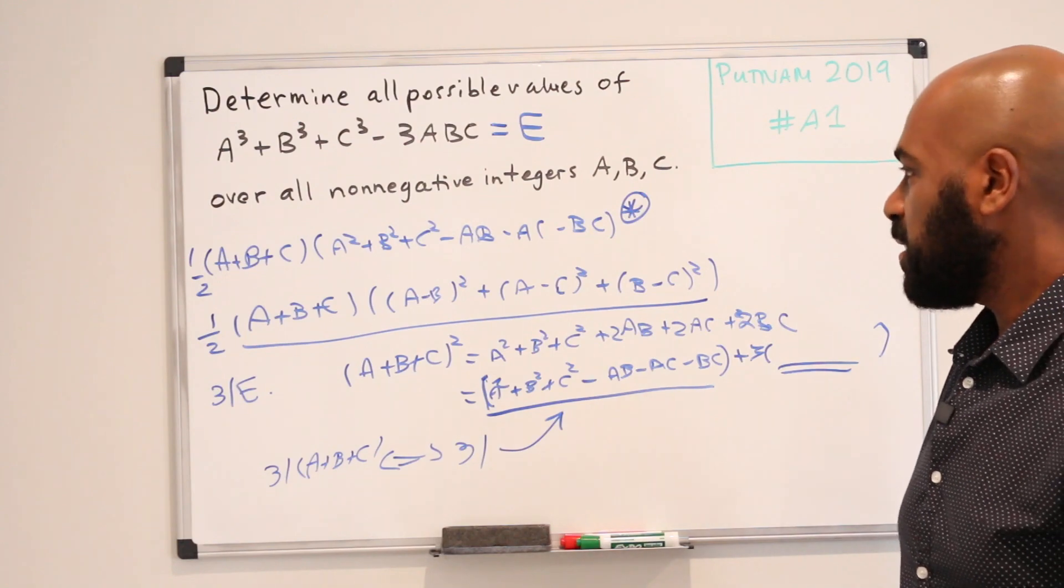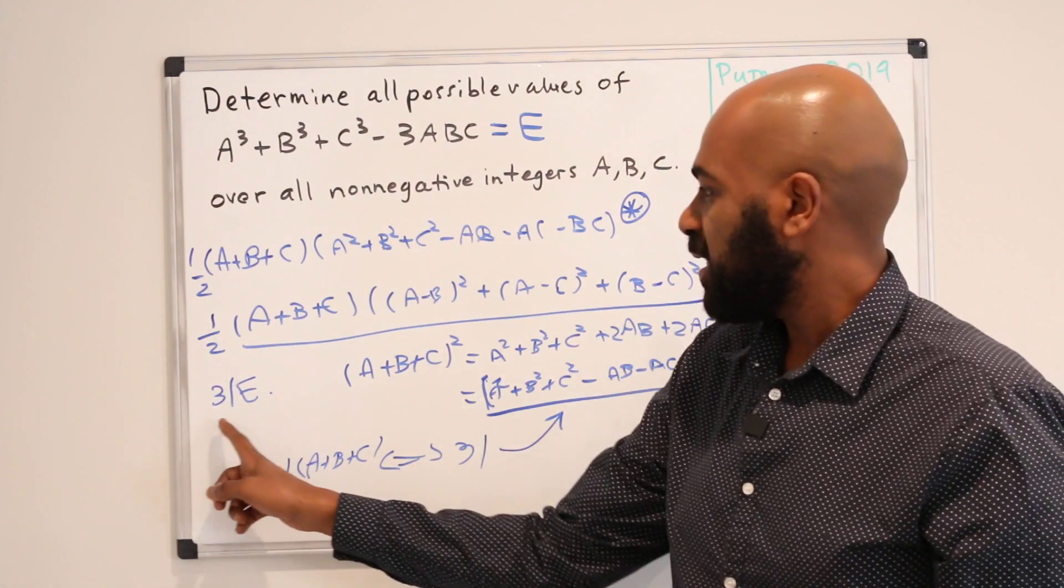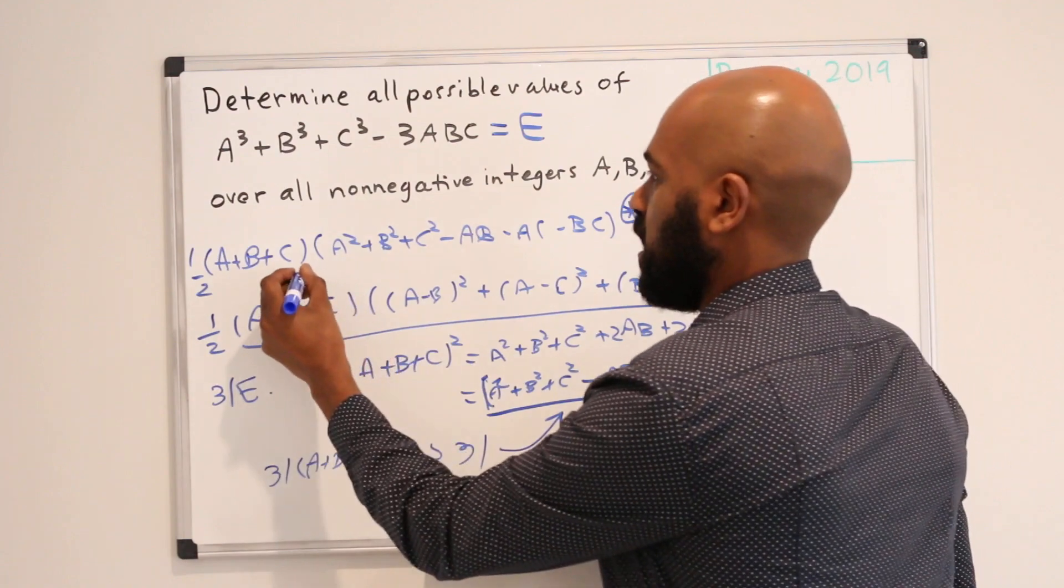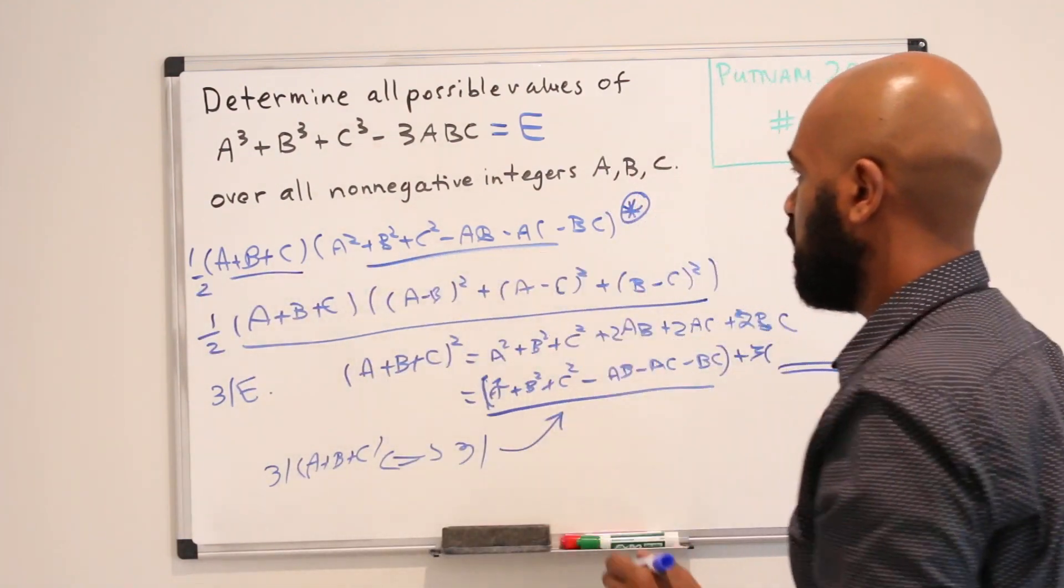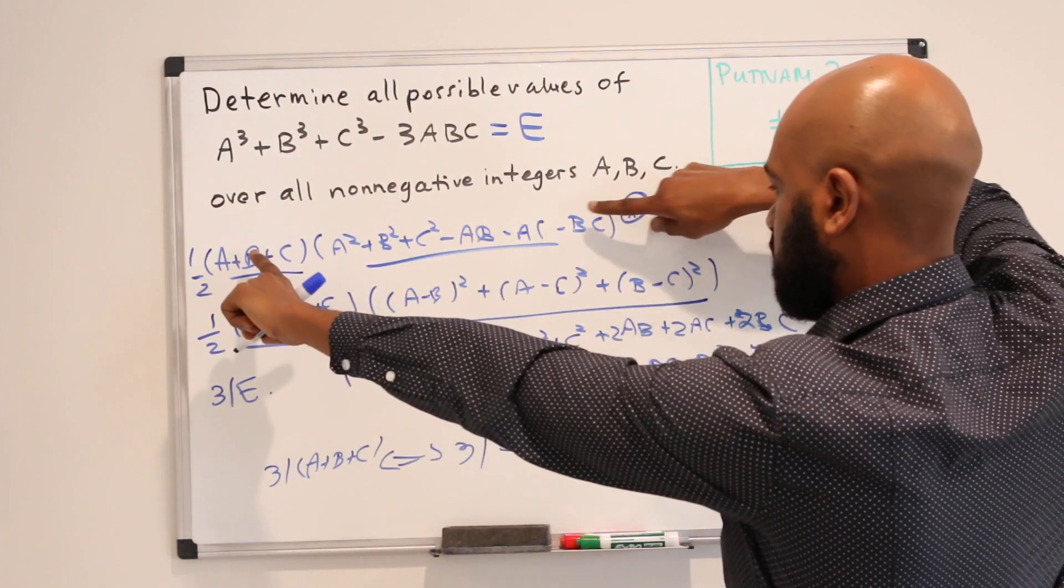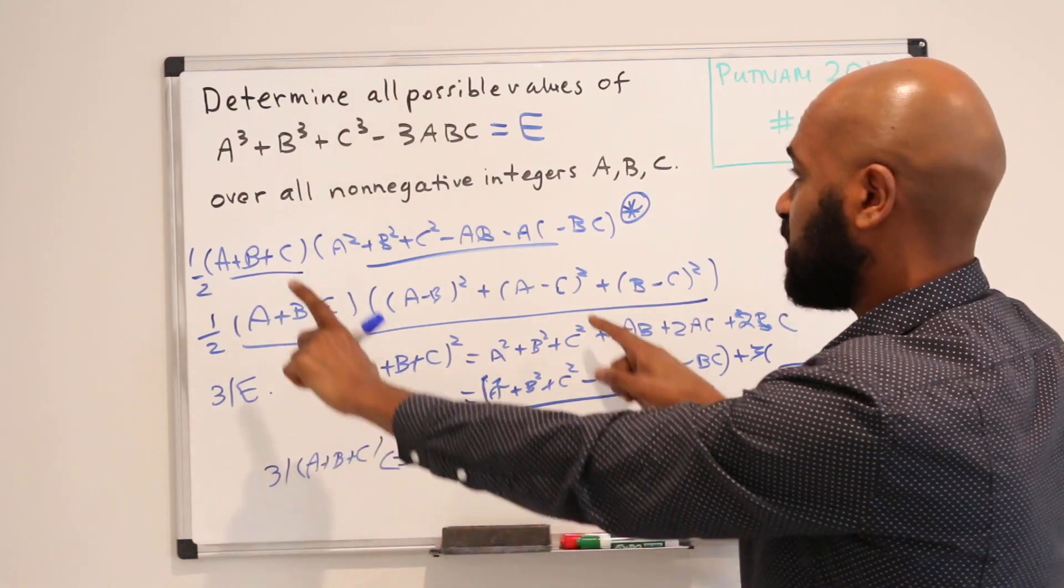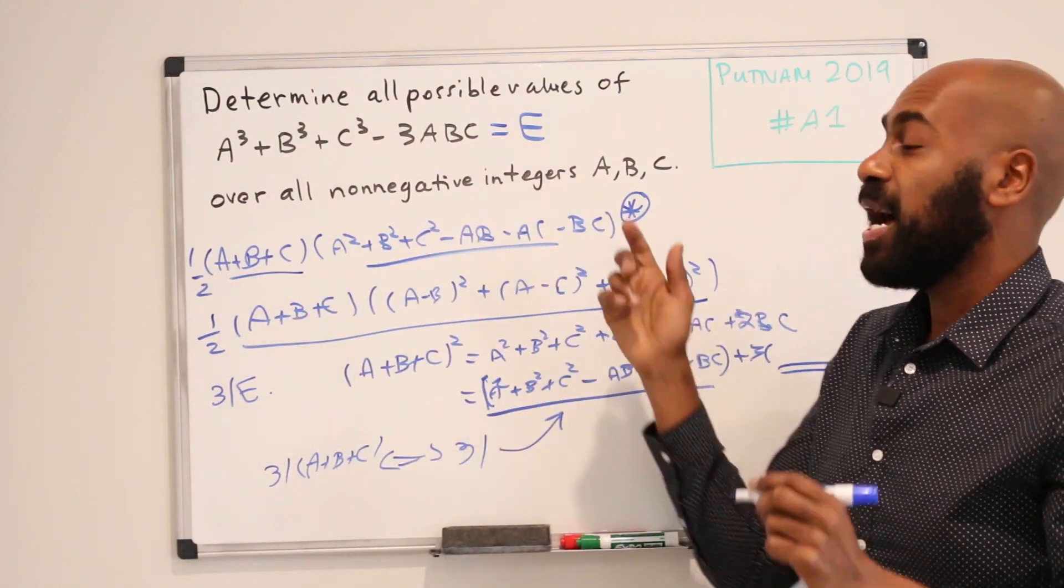So what does that mean about E? It means if 3 divides E, then 3 has to divide either this or this. But if 3 divides one of these by this argument, it divides the other, and so 9 must divide E.